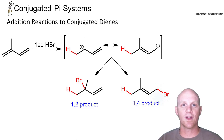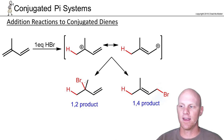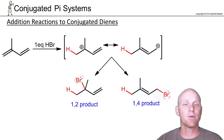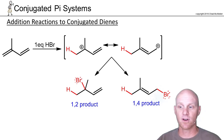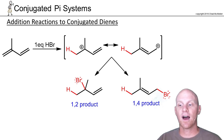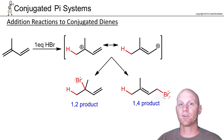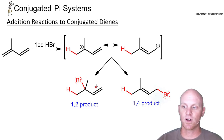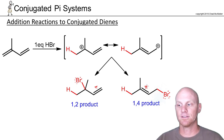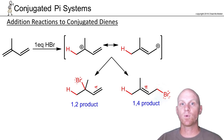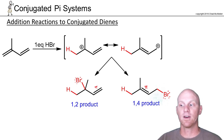First, we can look at which is the more stable product by considering the highest energy electrons. On either molecule that's likely the non-bonding electrons on bromine, but those are roughly equal across products. The next highest energy electrons are the pi electrons — pi electrons are higher energy than sigma electrons. So the most stable product is whichever has the more stable pi bond: more substituted is more stable than less substituted.